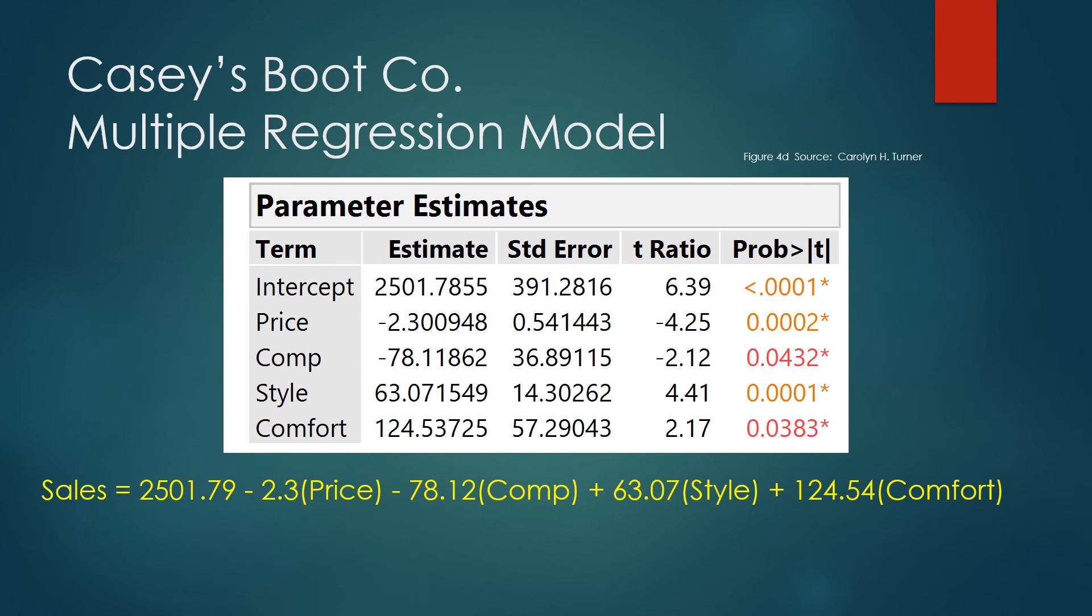So here's our model. You look under Parameter Estimates. Always start with Y, tell me its variable name, sales. In this case, equals. Then use the Y-intercept, 2,501.79. Then you have a negative coefficient for price. So you'll say minus 2.3 times price. You have another negative coefficient for competition. So minus 78.12 times competition, plus 63.07 times style, plus 124.54 times comfort.